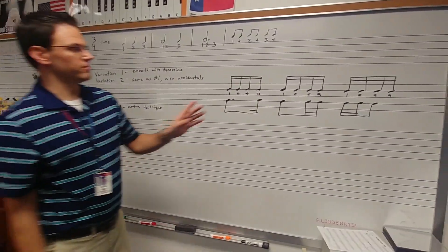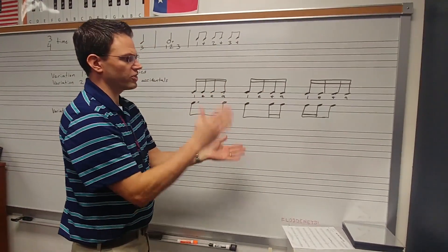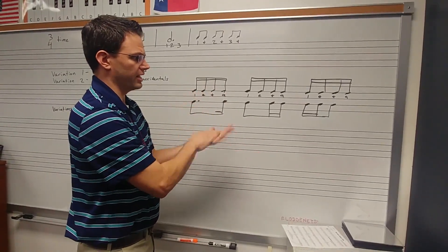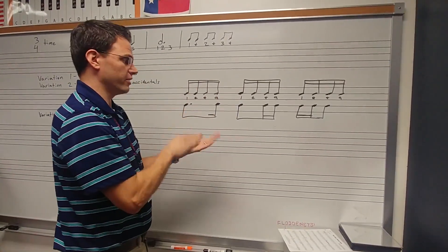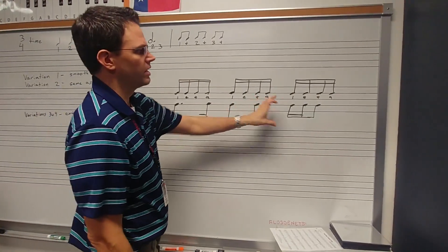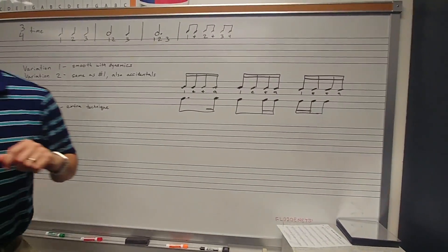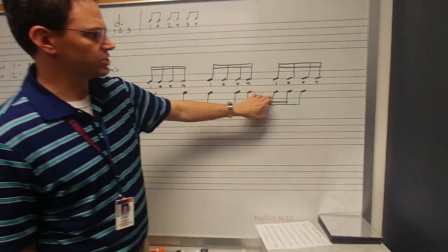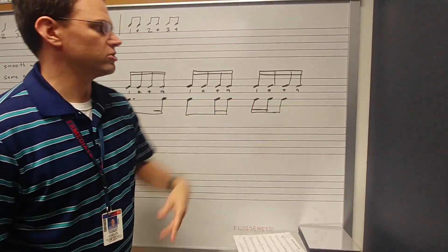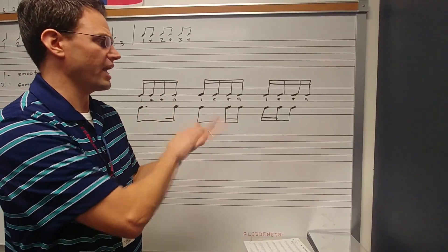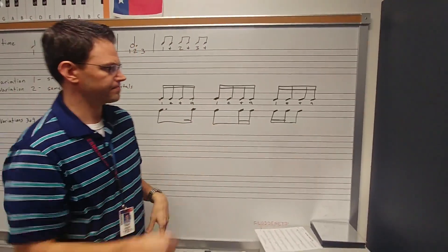Later on in that same measure, you will notice this pattern: an eighth note plus two 16th notes. An eighth note is equal to two 16th notes, so we would think one-E-and-a. You could also leave out the E and just say one-and-a, and that would be a fine way to interpret that. Then towards the end — this is the third measure of the fourth variation — you'll see two 16ths and an eighth note. That's going to be one-E, and then this eighth note equals the last two 16th notes. Or if you just omit the 'a,' one-E-and, two-E-and, three-E-and.